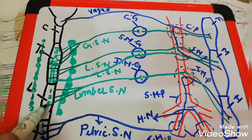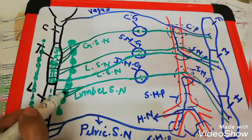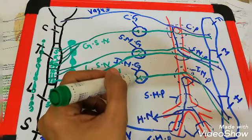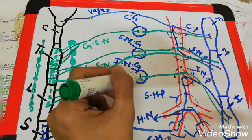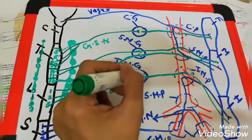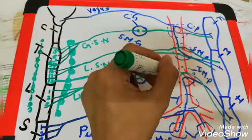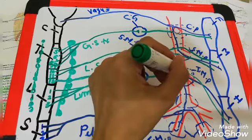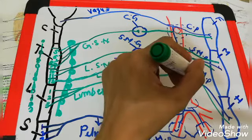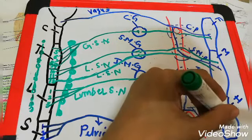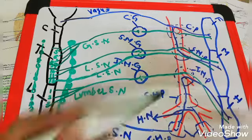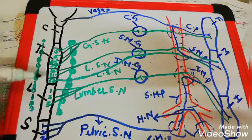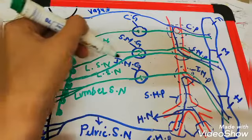From the lumbar spinal cord segments L1, 2, and 3, fibers pass through the sympathetic trunk as the lumbar splanchnic nerve, joining as pre-synaptic fibers to reach the inferior mesenteric ganglion. Post-synaptic fibers then join the inferior mesenteric plexus around the origin of the inferior mesenteric artery, forming a peri-arterial plexus to reach the hindgut and supply its derivatives. This completes the sympathetic thoracolumbar outflow.